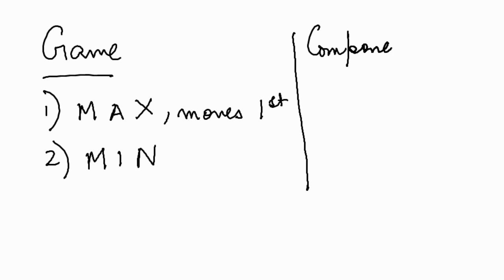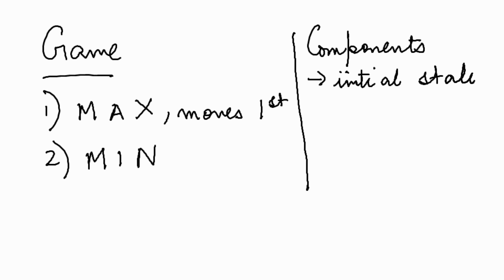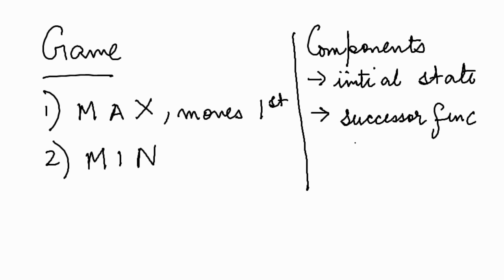Let us now look at the different components of the game. Firstly, we have the initial state, which includes the board position and the player who will move. Next we have the successor function, which returns the list of successor moves and the states they will result in.